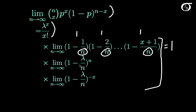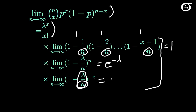For the second term, the limit as n tends to infinity of 1 minus lambda over n to the nth power is e to the minus lambda, by the property discussed earlier. For the third term, as n tends to infinity, lambda over n tends to 0, and so that entire term tends to 1.